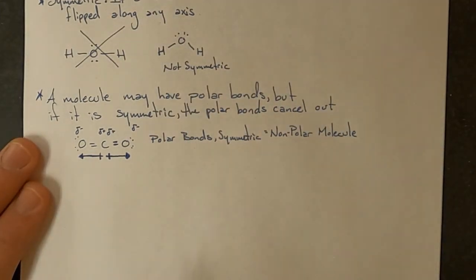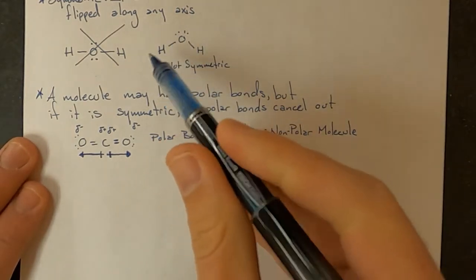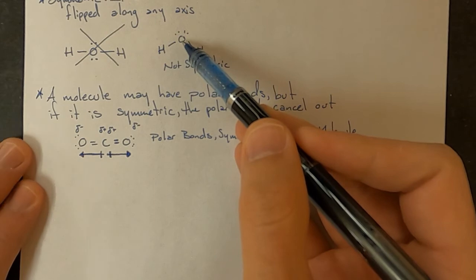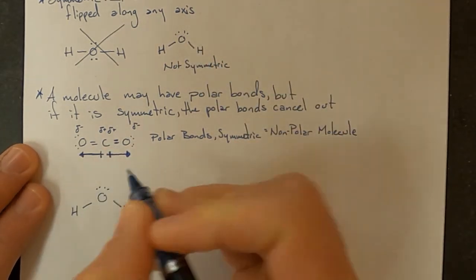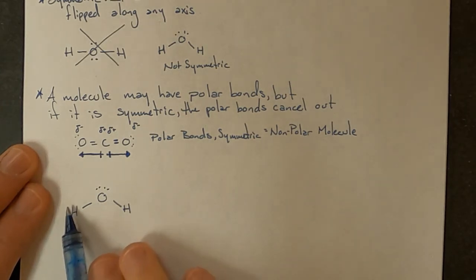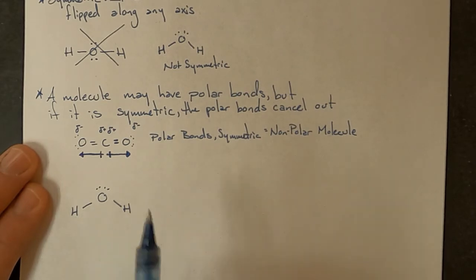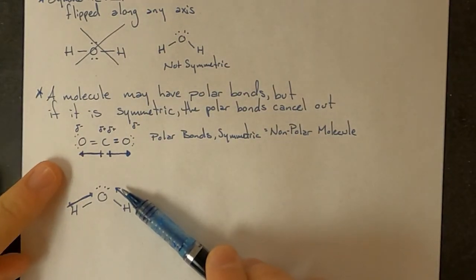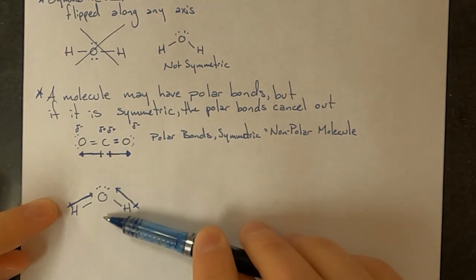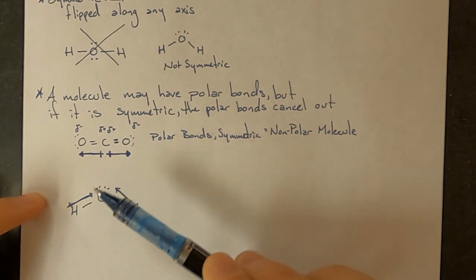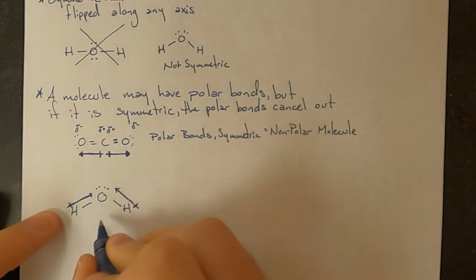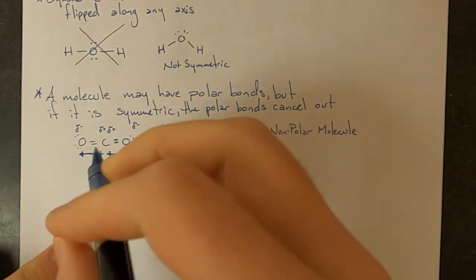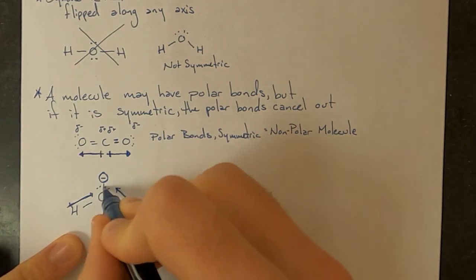Water is an example of a molecule that is not symmetric and has polar bonds between hydrogen and oxygen — hydrogen's electronegativity being 2.1 or 2.2, and oxygen's being 3.5. Dipole arrows are drawn going from the hydrogen toward the oxygen. These two dipole arrows only oppose each other in the x-axis but do not counter each other in the y-direction, so they do not cancel out. This molecule has a slightly positive side at the bottom and a slightly negative side at the top, and you can draw an overall dipole arrow for the entire molecule.